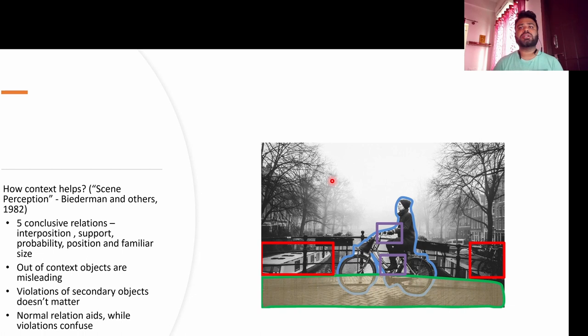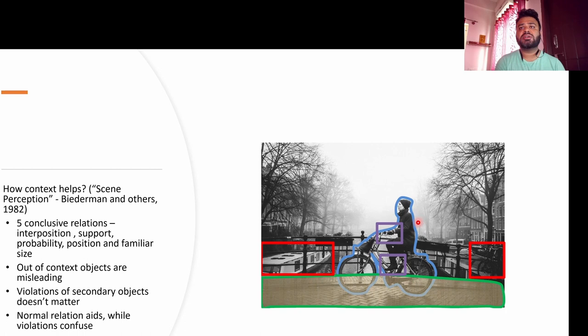Consider this image as an example — the action being performed is riding a bicycle. For this recognition, there are contextual cues that are helpful: the pose of the person itself, the presence of the bicycle, and the pavement on which the bicycle is being ridden. But there are also some misleading contextual cues present — for instance, the presence of a boat and a canal underneath — which are misleading cues that could confuse the model.